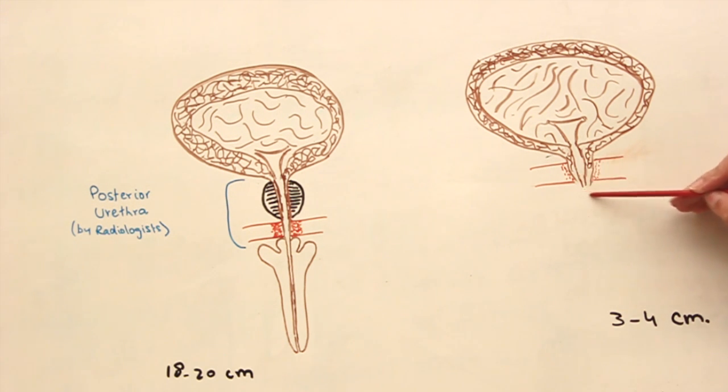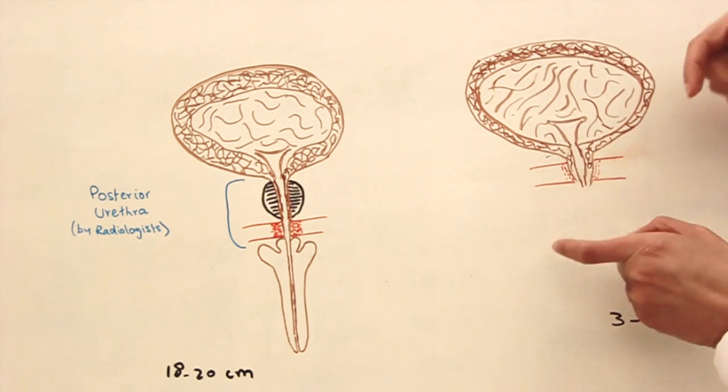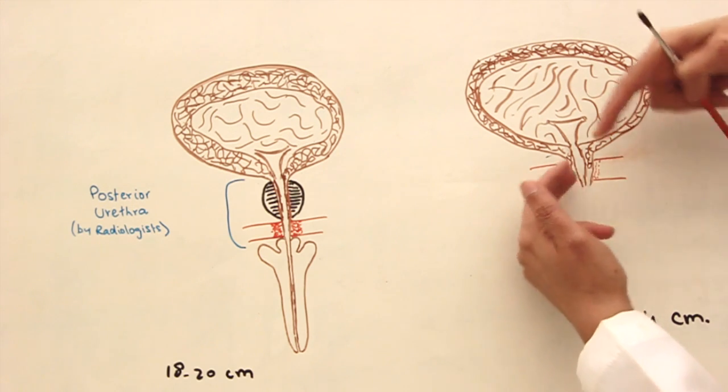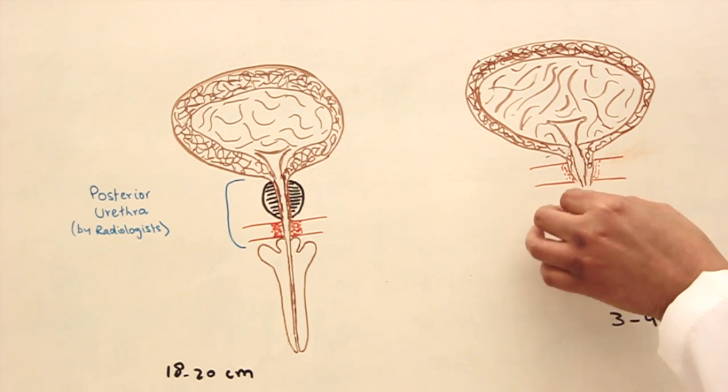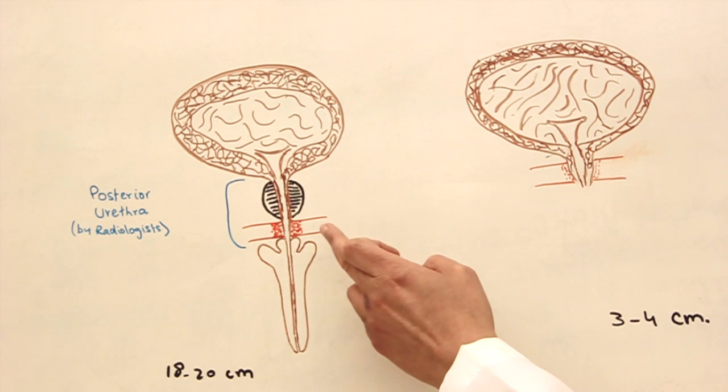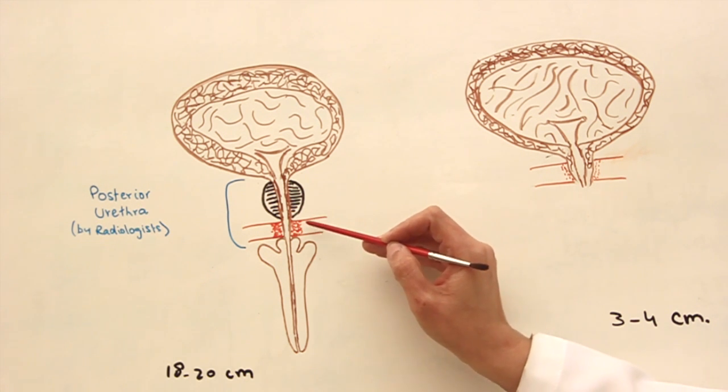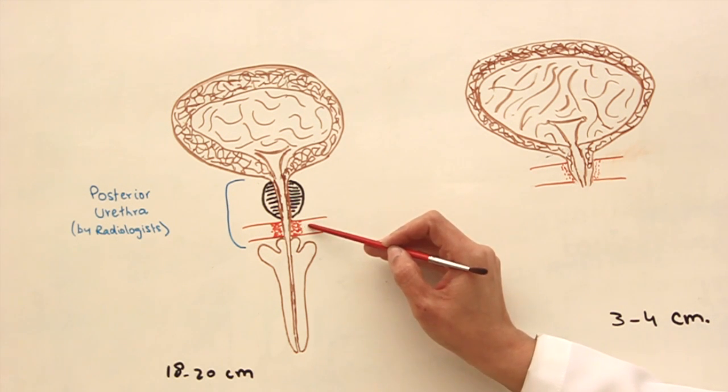The external urethral sphincter in females, as you can see, although it is there, it is partially present. It's covering the urethra mostly from front, because behind is the vagina. The wall of the female urethra is blending in with the wall of vagina. So the external urethral sphincter in females is not very well developed as compared to males. You can see over here it's a very strong muscle. I forgot to mention that the external urethral sphincter is under voluntary control because it is made up of skeletal muscles, and they are innervated by the pudendal nerve.